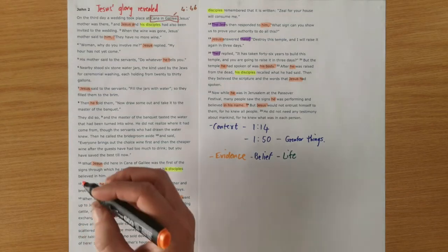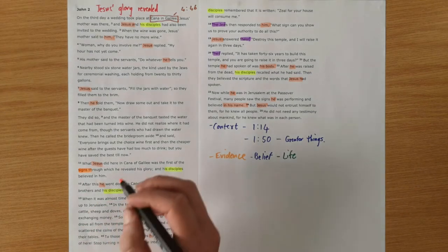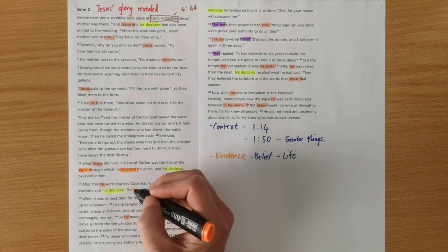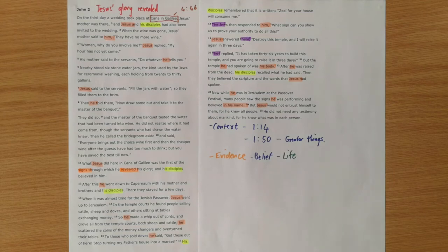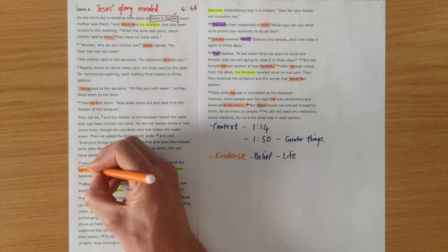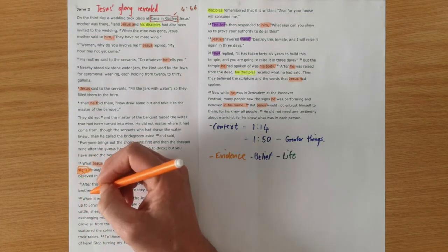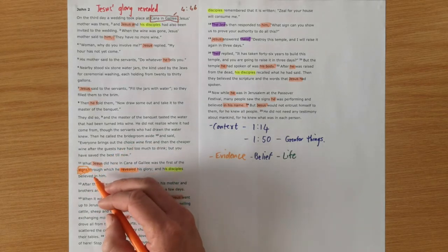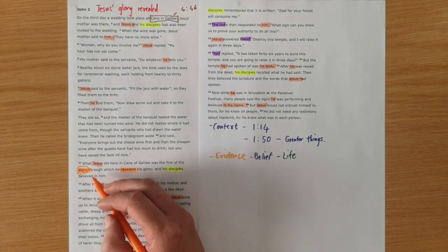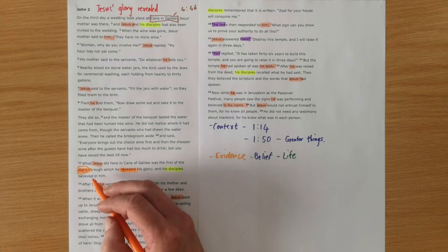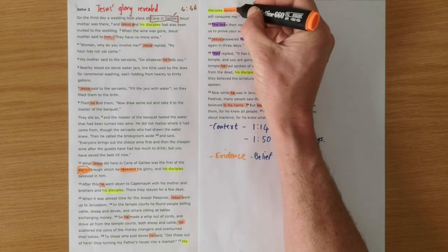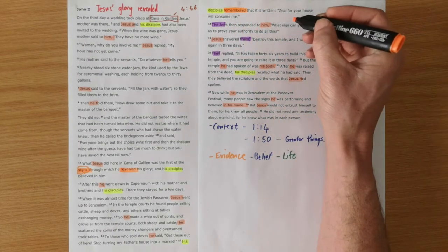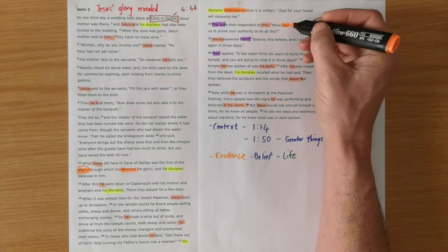So we're told here that what Jesus did here in Canaan was the first of His signs through which He revealed His glory. And this idea of signs, we're going to see a whole number of signs through the Gospel. And all these signs attest to Jesus' identity as the Messiah, as the Son of God. And they are meant to lead us to faith. So this is the first sign, but we also hear the disciples remembering things.